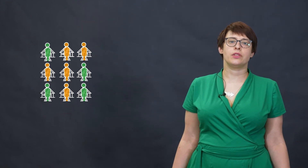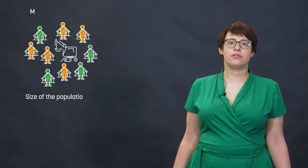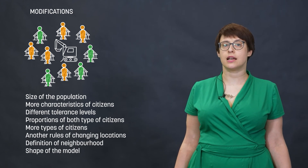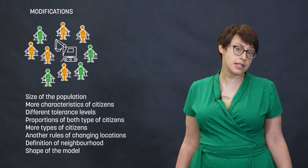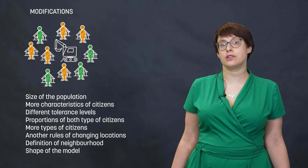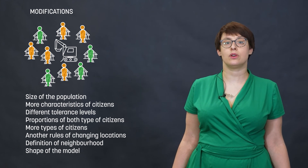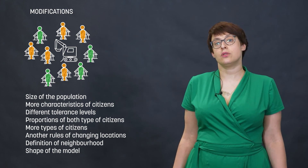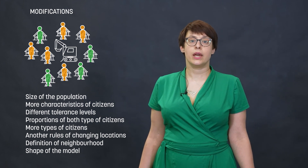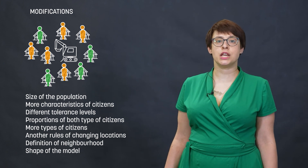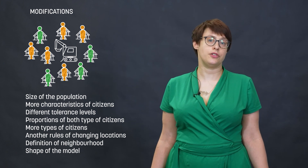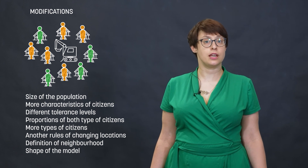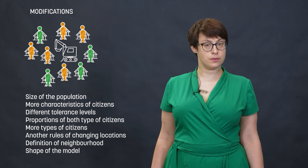In this video we were talking about several modifications of the model. We can change the size of the population, add more characteristics of citizens, and apply different tolerance levels. We can change proportions of both types of citizens and also add more types of them. We can also modify the rules of changing locations and the definition of neighborhood. And finally, we can change the shape of a model.